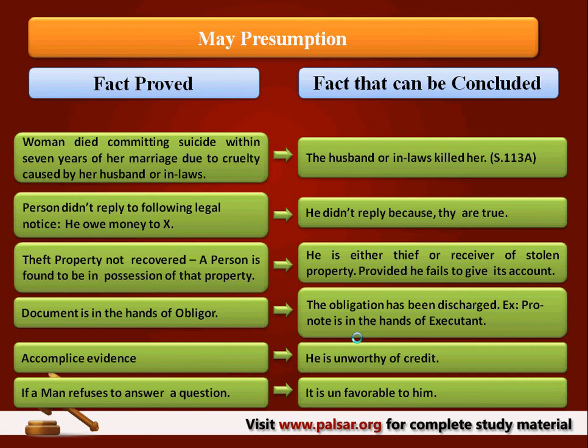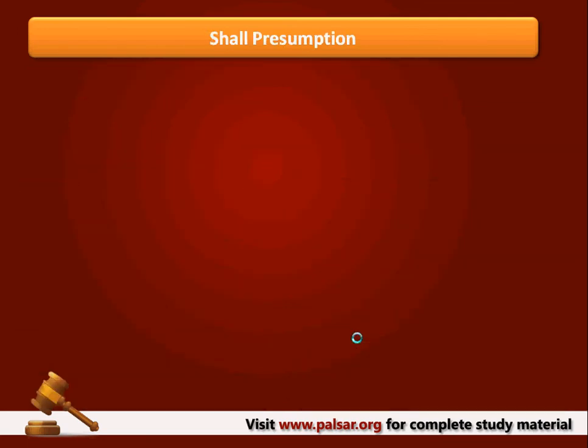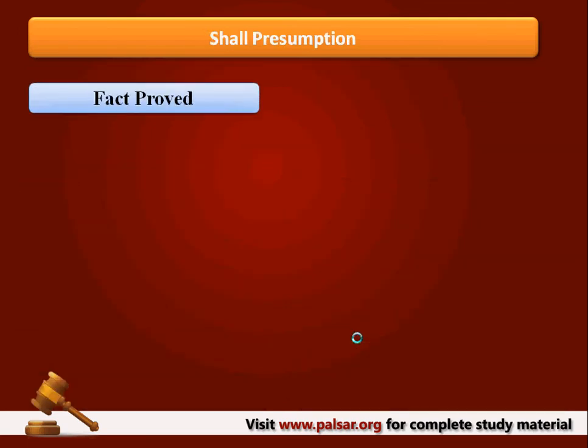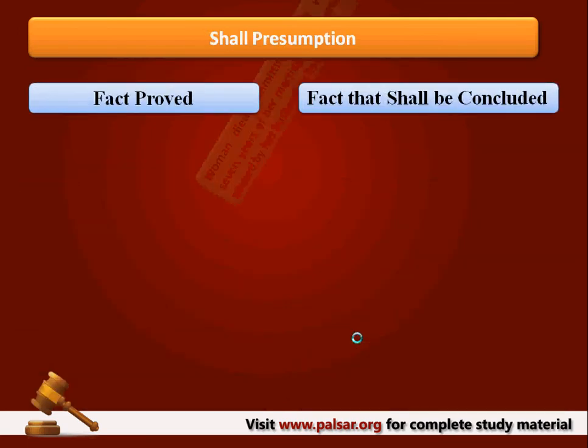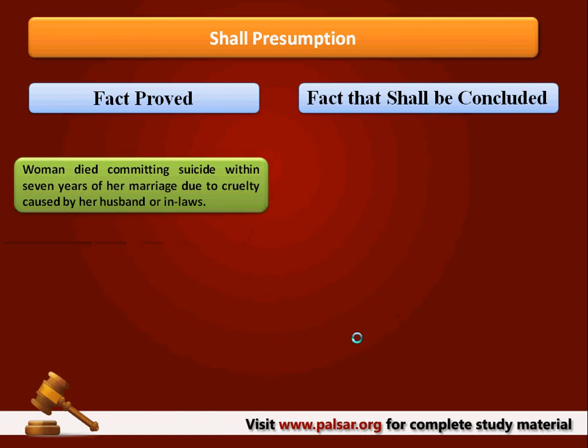Similarly, a person who is an accomplice — if he gives evidence against his former friend, the court may presume that he is unworthy of credit. Now coming to Shall Presumption: under Shall Presumption, if the act specifically says you shall presume this fact, the court has no option except to presume.